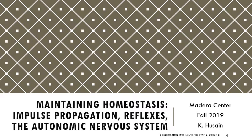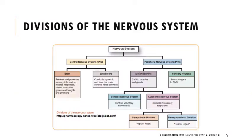We're going to start by talking about homeostasis and the role of the nervous system in maintaining it through propagating impulses, engaging with reflexes, and the autonomic nervous system. Remember, when we talk about the nervous system we have both anatomical and physiological distinctions. We have the central nervous system — the brain and spinal cord — and the peripheral nervous system, which includes everything else. Information flows in from the external environment to the CNS and back out through motor neurons as part of the somatic or autonomic nervous systems, which are voluntary and involuntary responses respectively.